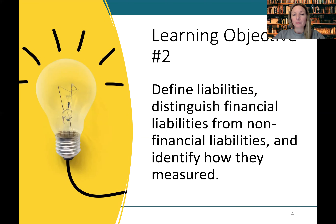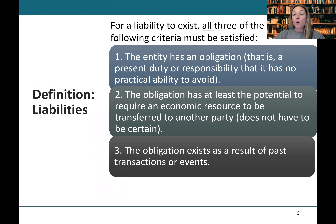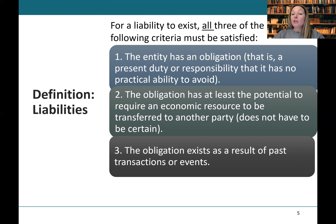Learning Objective 2: define liabilities, distinguish financial liabilities from non-financial liabilities, and identify how they are measured. For a liability to exist, all three of the following criteria must be satisfied. Number one: the entity has an obligation or a present duty or responsibility that it has no practical ability to avoid — for instance, if it tried to avoid the liability, it may be sued for breach of contract.